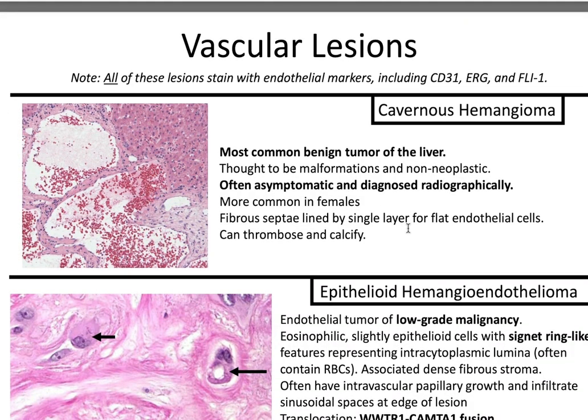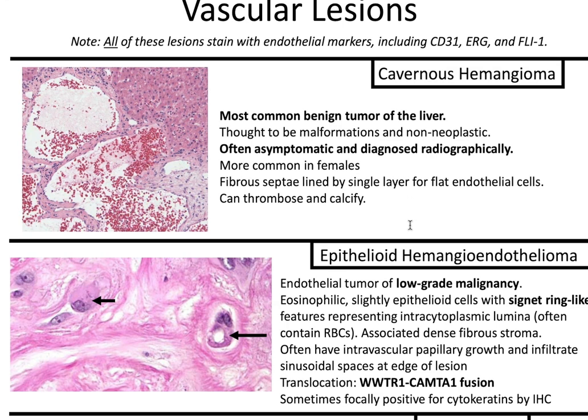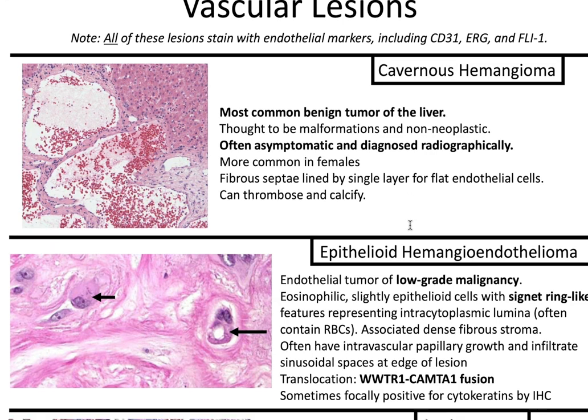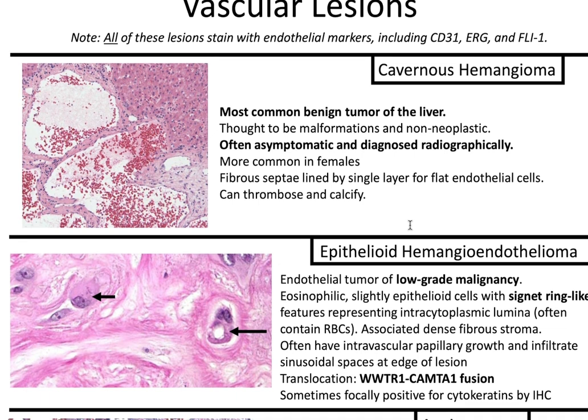Vascular lesions. Note all of these lesions stain with endothelial markers including CD31, ERG, and FLI-1. Cavernous hemangioma is the most common benign tumor of the liver. It's thought to be a malformation and non-neoplastic, often asymptomatic and diagnosed radiographically, and more common in females. You'll have fibrous septae lined by a single layer of flat endothelial cells; it can thrombose and calcify.